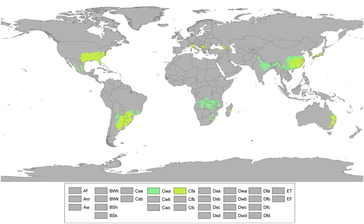While many subtropical climates tend to be located at or near coastal locations, in some cases they extend inland, most notably in China, the United States, and southeastern South America.